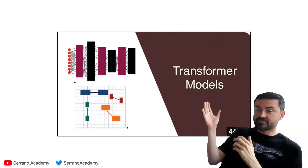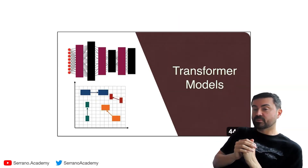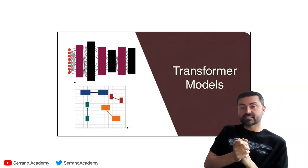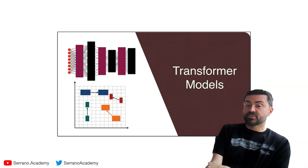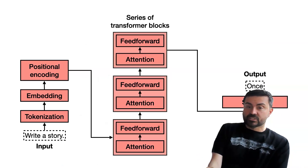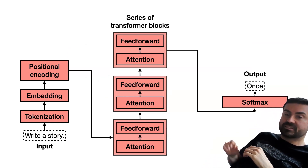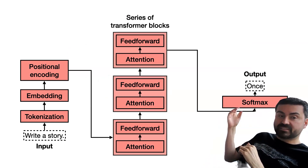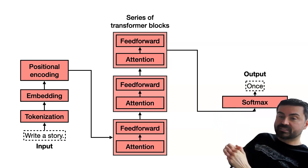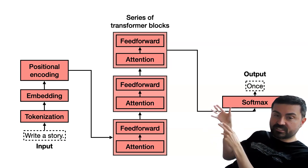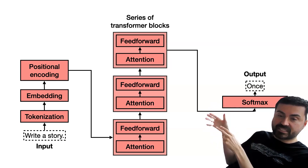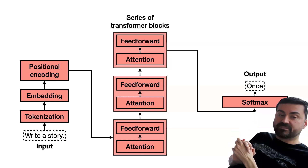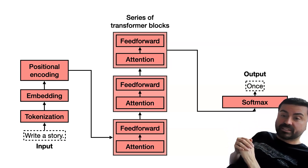This video is part of a long series of videos I have about transformers, attention, positional encoding, and all that. You can find the links in the description of the video. In these videos I talk about the architecture of a transformer. You have several pieces: tokenization, embeddings, positional encodings, and the meat of the transformer which is the feed-forward neural network and attention, and finally a softmax layer at the very end in order to output the next word.